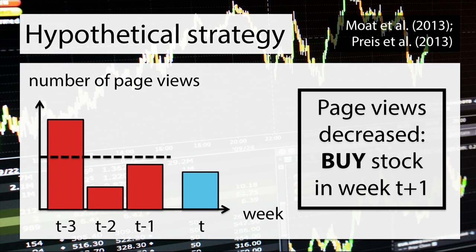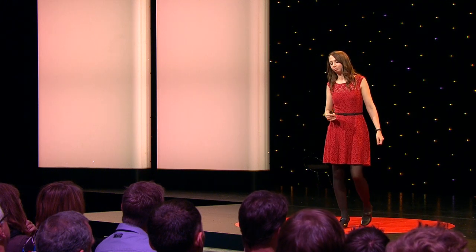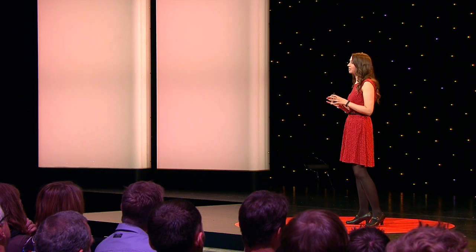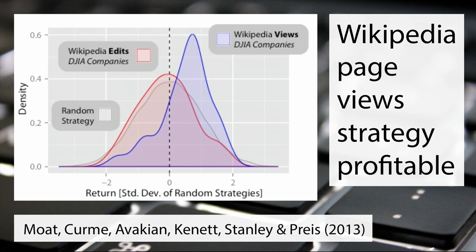And we didn't just do this with Bank of America. We did it for all pages relating to the 30 companies in the Dow Jones — so JP Morgan, IBM, for example. Using data that Wikipedia makes available from 2007 onwards until 2012, which is when we carried out this study, this is what we found. Whereas trading randomly every week — making a random decision to buy or sell within this period — would have on average led to no profit or loss, our Wikipedia page view strategy using these 30 pages about companies in the Dow Jones industrial average would have made, according to our analysis, a significant profit during this period.